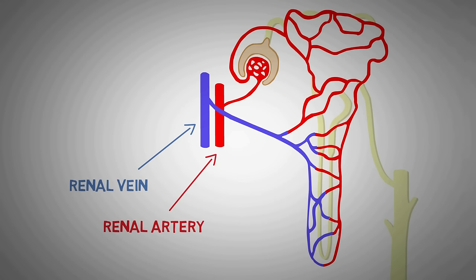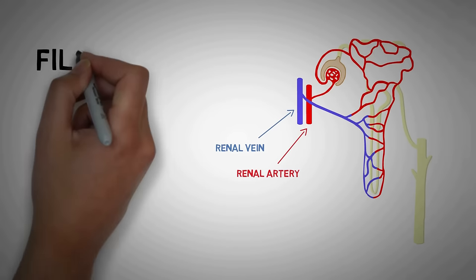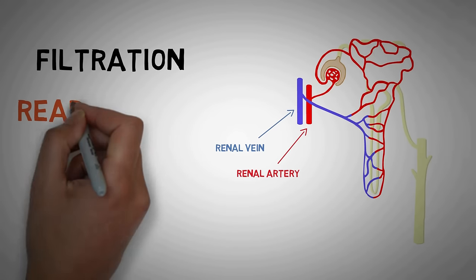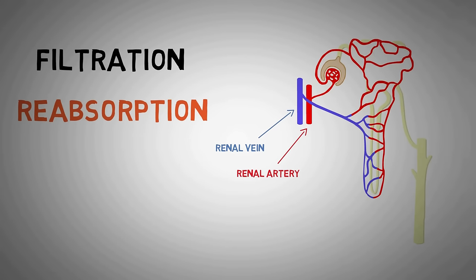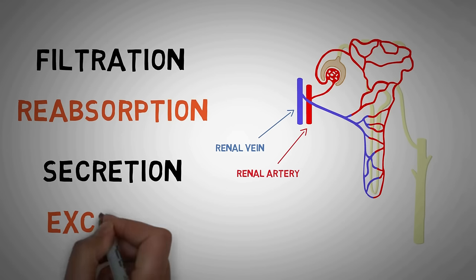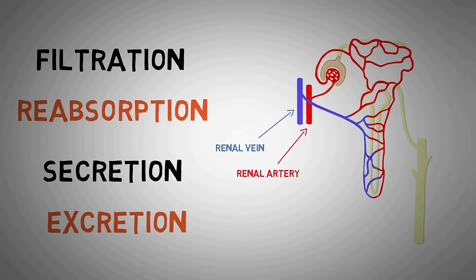This was about the structure of the nephron. Next, let's look at its basic function. The nephron uses four main mechanisms to convert blood into urine: filtration, reabsorption, secretion, and excretion.